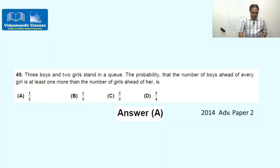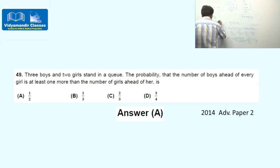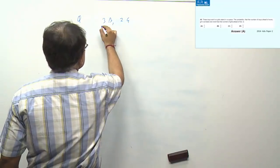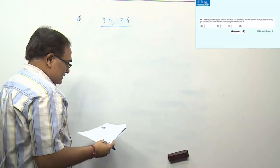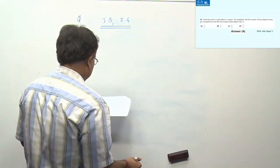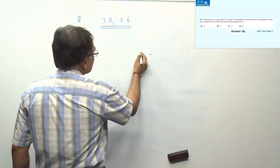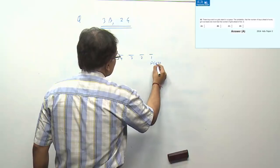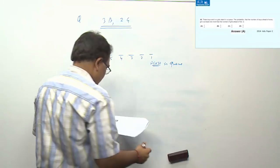From 2014 Advanced: 3 boys and 2 girls stand in a queue. What is the probability that the number of boys ahead of every girl is at least one more than the number of girls ahead of her? We consider positions 1 through 5 from the front. Position 1 cannot be a girl (no boys ahead). We enumerate valid arrangements.